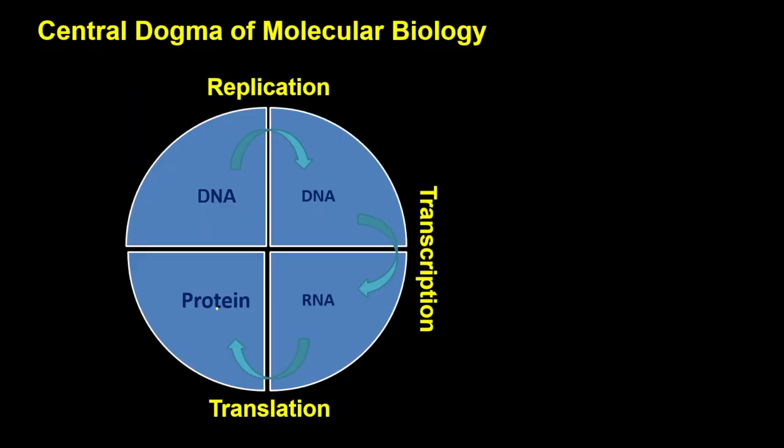Subsequent to that, we were also discussing the central dogma of molecular biology. So far we have discussed replication, transcription, and in this current module we are discussing translation. The central dogma involves: synthesis of new DNA from pre-existing DNA by replication; RNA produced from DNA by transcription; and today we discuss translation, where information on the RNA is used to synthesize protein molecules.